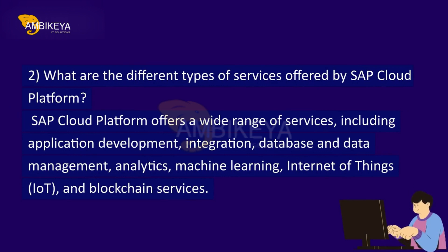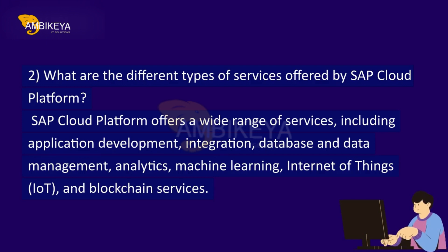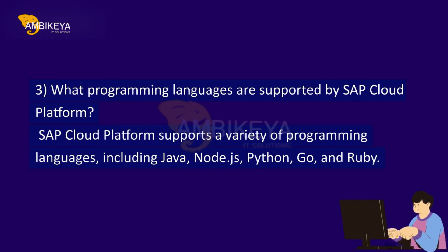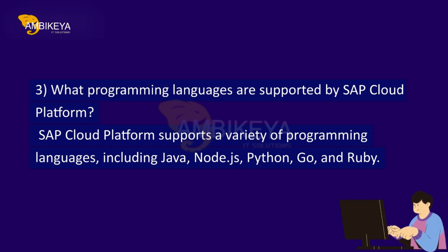What are the different types of services offered by SAP Cloud Platform? SAP Cloud Platform offers a wide range of services including application development, integration, database and data management, analytics, machine learning, Internet of Things (IoT), and blockchain services. What programming languages are supported? SAP Cloud Platform supports a variety of programming languages including Java, Node.js, Python, Go, and Ruby.